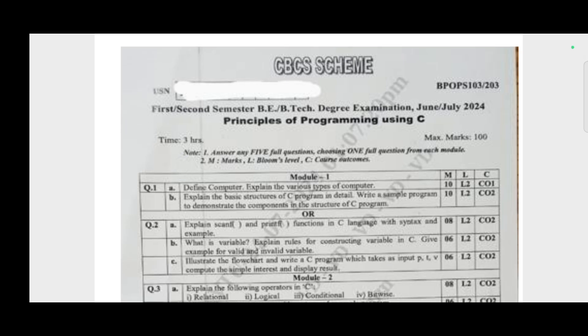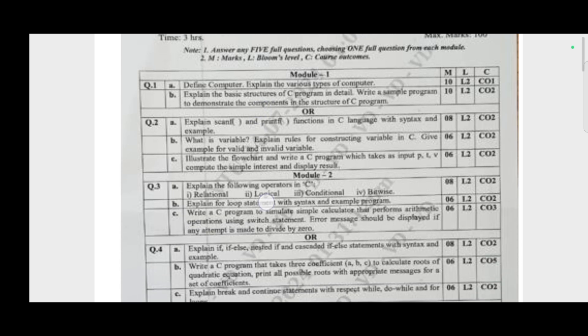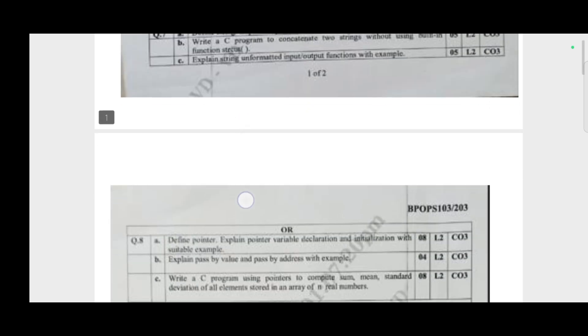First of all, we have define computer, explain the various types of computer. It is of 10 marks. Let me show you how they will allot the marks for these particular two questions.